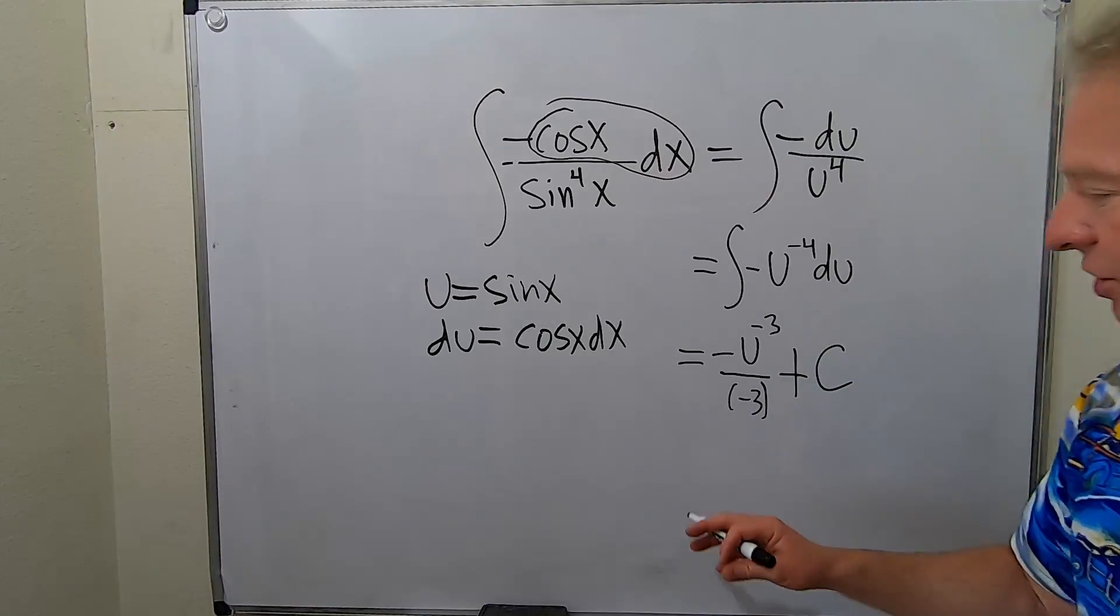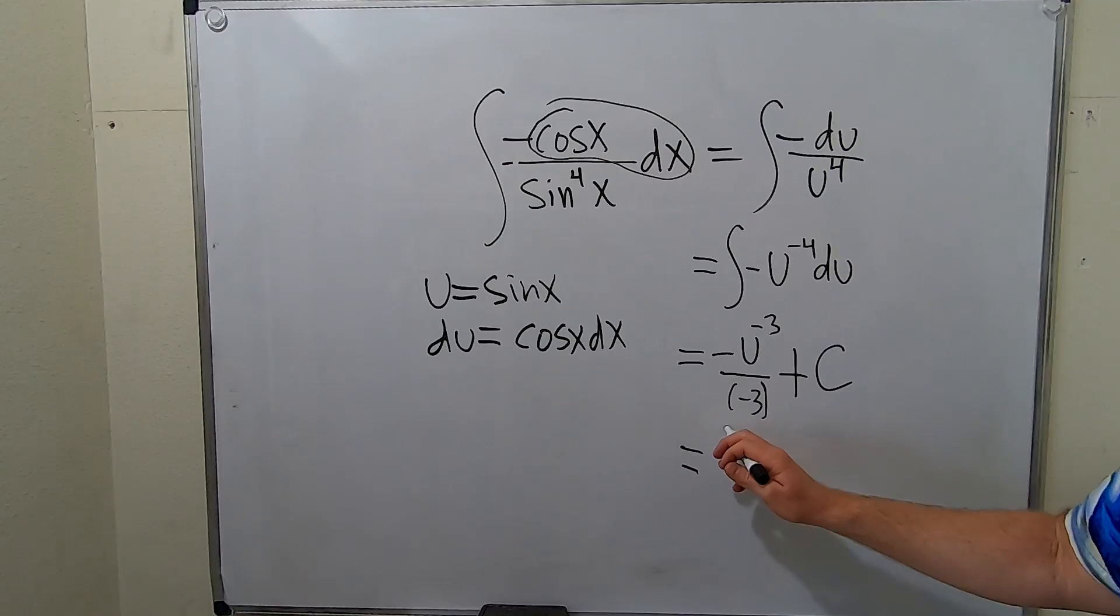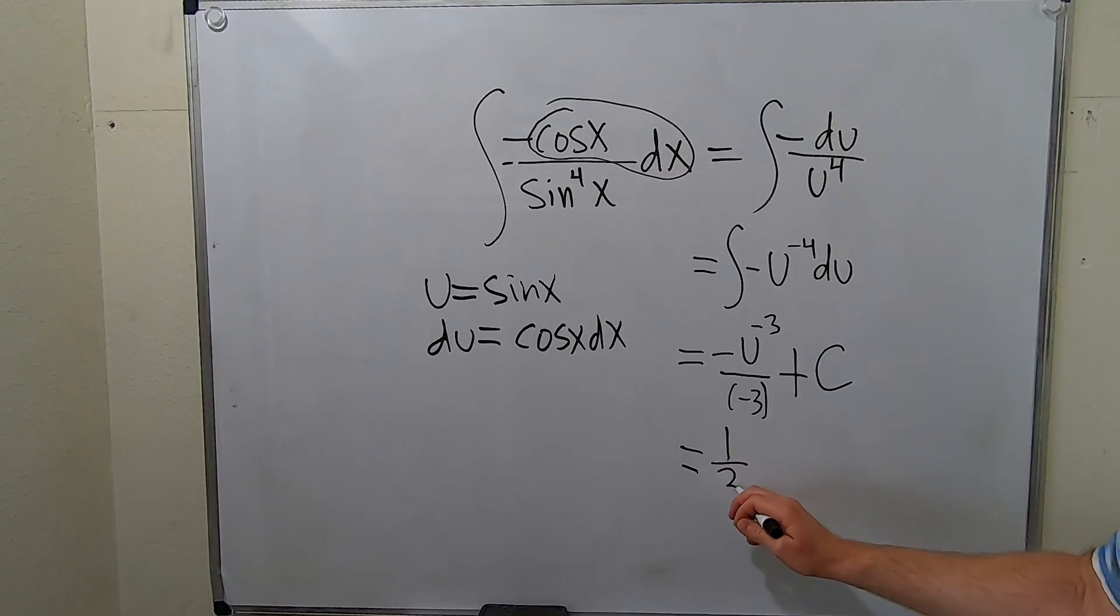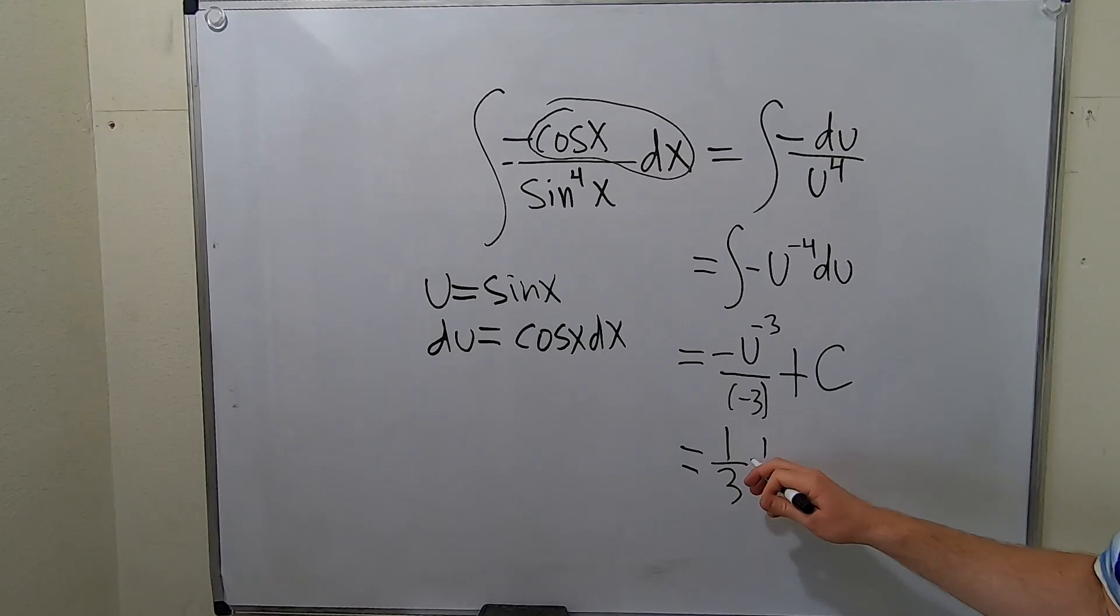So this is equal to negative and negative is positive. So this is one over three. Let's take this u and bring it downstairs. So this is one over u cubed plus C.